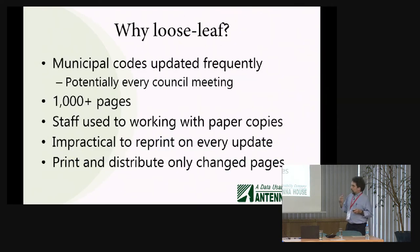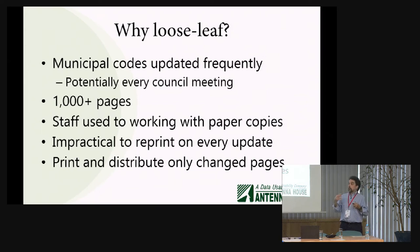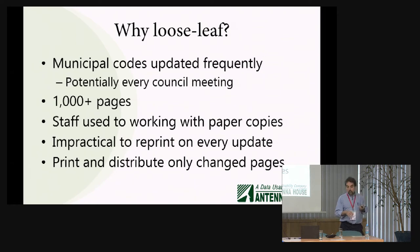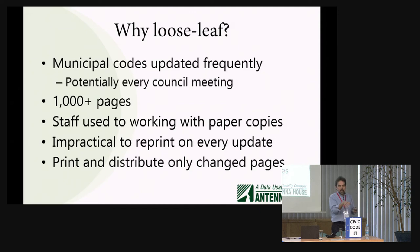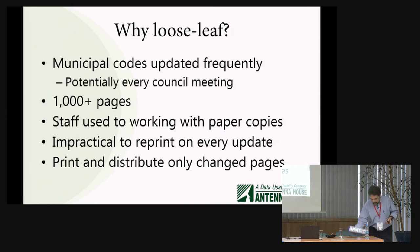So why is Municode doing loose leaf? Because their content — the bylaws, etc. — updates frequently. You might find that every council meeting the council makes some resolution which is going to affect the bylaws. The civic code could be quite a large document held in a binder. Staff are used to working with their paper copies. I can imagine copies in offices around the US covered with post-it notes and scrawled things on the pages.